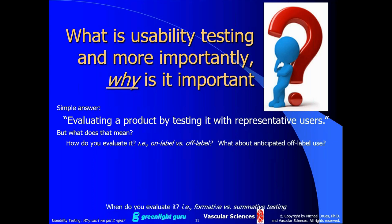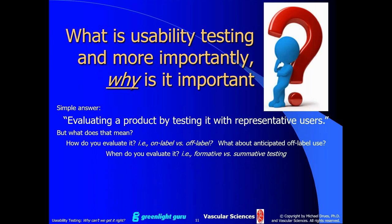When do you evaluate your device — what part of the product development life cycle? Traditionally, we break usability testing into two phases. First is formative usability testing, which happens before the design freeze while the product is still being developed. The purpose of formative testing is simply to provide feedback to the engineers and designers about how their product is working. Strictly speaking, because it is before design freeze, it is not part of your final verification and validation testing.